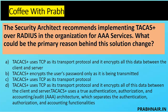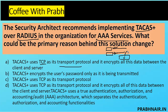A security architect recommends implementing TACACS+ over RADIUS in the organization for AAA service. What could be the primary reason behind this solution change? Consider this setup: a VPN server, a dial-up server, and a wireless access point — all connected to a TACACS server, which connects to Active Directory. When information comes in from outside through VPN or dial-up, it passes to TACACS, and TACACS encrypts the communication between itself and AD. If anyone tries to intercept, it is difficult to do so.